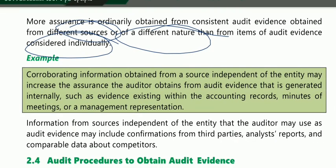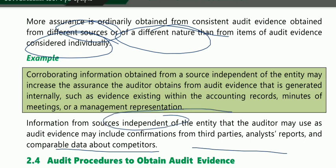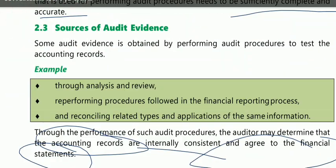Corroborating information obtained from a source independent of the entity may increase the assurance the auditor obtains from audit evidence that is generated internally — such as evidence existing within accounting records, minutes of meetings, or management representations. Information from sources independent of the entity, such as confirmation from third parties, reports, and comparable data, increases reliability since it is independent of the entity.